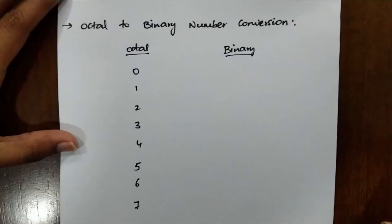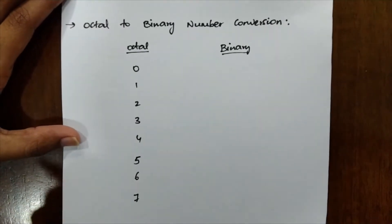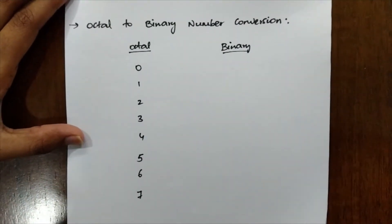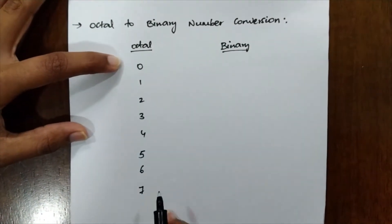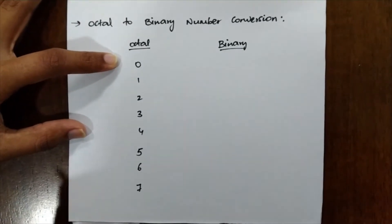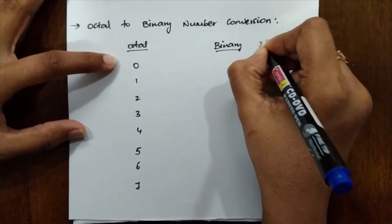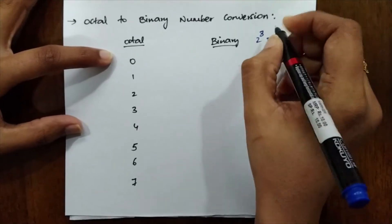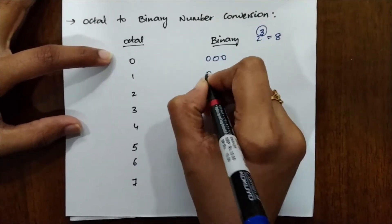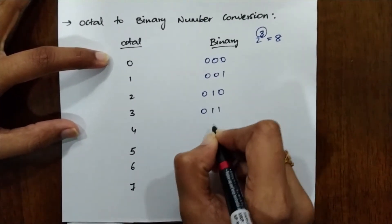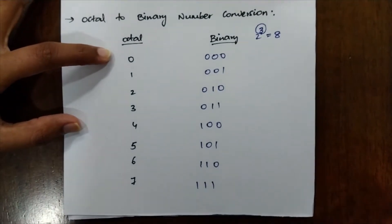First: octal to binary number conversion. The base for octal is 8, and it uses only digits from 0 to 7. To represent these in binary format, three bits are required. Why? Because 2³ equals 8, so only three bits are needed. The representations are: 0→000, 1→001, 2→010, 3→011, 4→100, 5→101, 6→110, and 7→111.